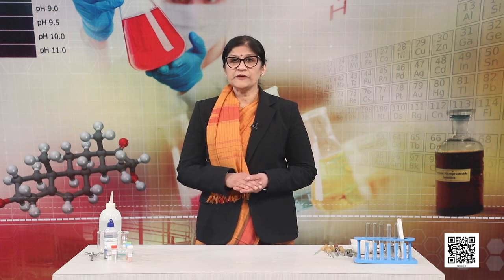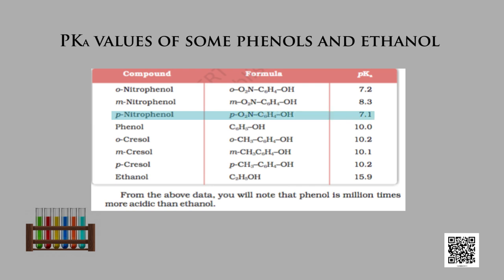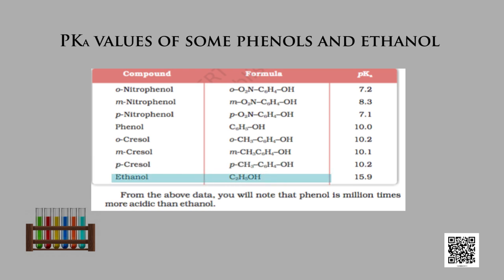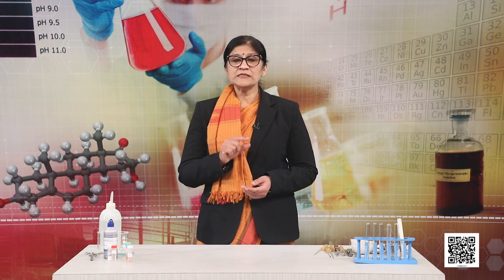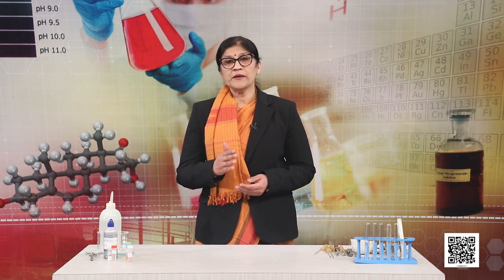Let us look at orthonitrophenol, metanitrophenol and paranitrophenol. Orthonitrophenol has a pKa of 7.2, metanitrophenol 8.3, and paranitrophenol 7.1, whereas phenol has a pKa of 10. Ortho-cresol has 10.2, meta-cresol 10.1, and para-cresol 10.2. Ethanol is 15.9. Nitro groups are electron withdrawing, so they increase the acidic character of phenols, whereas methyl groups being electron donating decrease the acidic character.